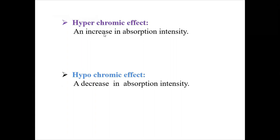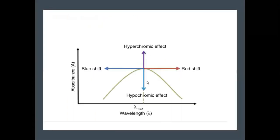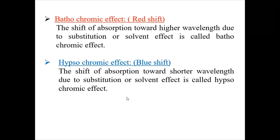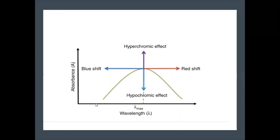Next are hyperchromic shift and hypochromic shift. Referring to the graph: red shift is movement to higher wavelength on the x-axis, blue shift is movement to lower wavelength on the x-axis. Hyperchromic shift means an increase in absorption intensity — you are moving upward on the y-axis. Hypochromic shift means a decrease in absorption intensity — the intensity goes down on the y-axis. These are all the shifts observed in UV spectra.